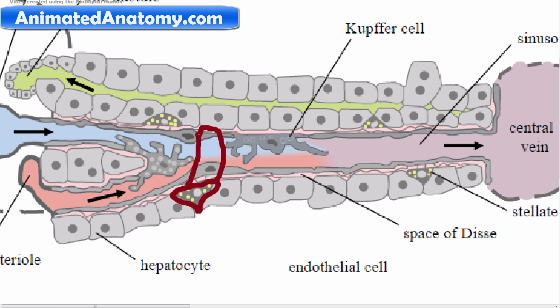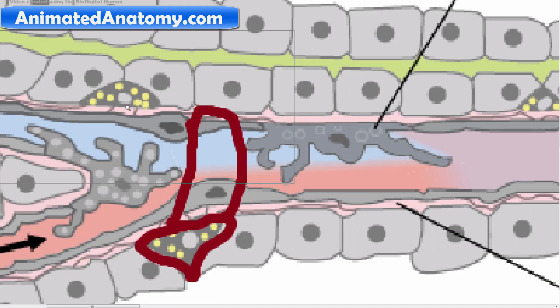However, when the liver is damaged, the stellate cells can change into an activated state, characterized by proliferation, contractility, and chemotaxis. When they change into an activated state, the lipid droplets — which store vitamin A and retinol ester — have their amount of stored vitamin A decreased progressively. Activated stellate cells are also responsible for producing collagen and scar tissue, which can lead to liver cirrhosis.